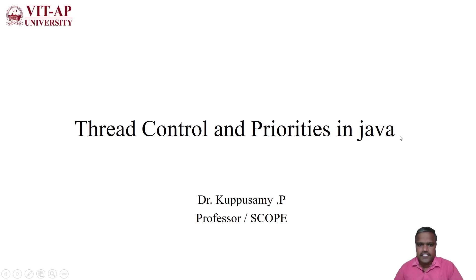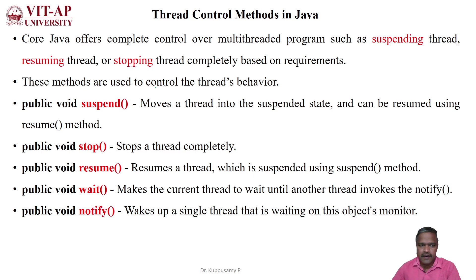Hi everyone. In this session we will discuss about thread control and its priorities in Java multithreaded programming. Core Java offers complete control over a multithreaded program by suspending, resuming, or stopping threads completely based on user requirements. These methods are used to control the thread's behavior in multithreaded programming.